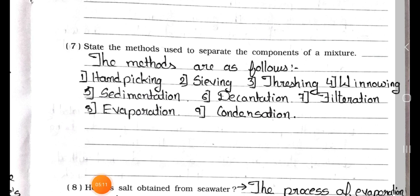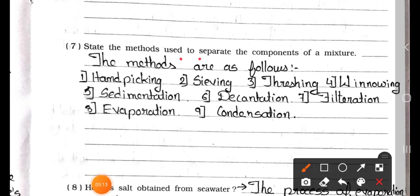Question 7: State the methods used to separate the components of a mixture. Answer: The methods are as follows — 1. Hand picking, 2. Sieving, 3. Threshing, 4. Winnowing, 5. Sedimentation, 6. Decantation, 7. Filtration, 8. Evaporation, 9. Condensation.